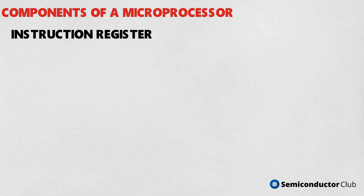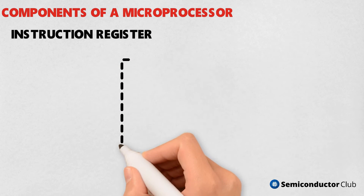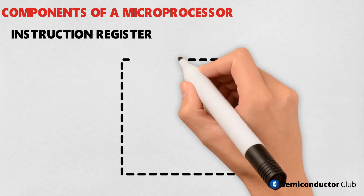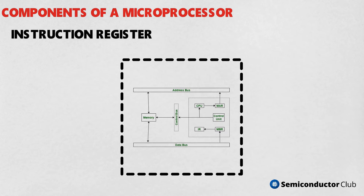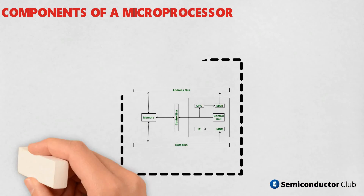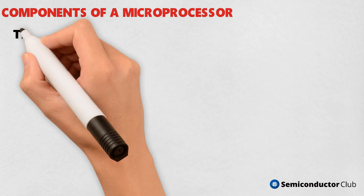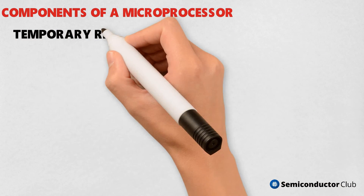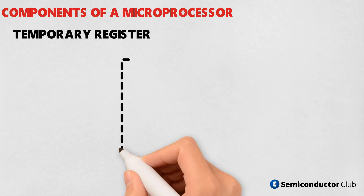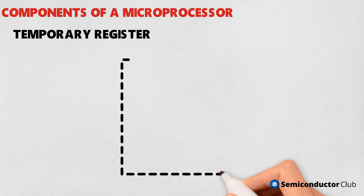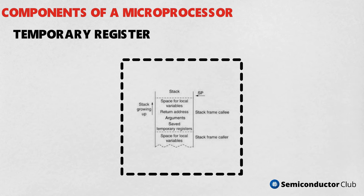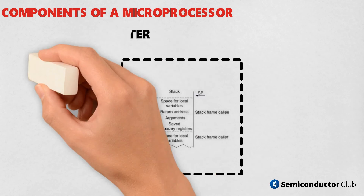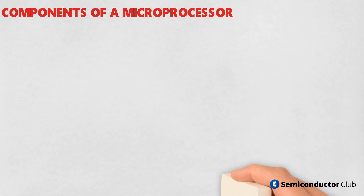Instruction Register. The instruction register holds the opcode, operation code or instruction code, of the instruction which is being decoded and executed. Temporary Register. It is an 8-bit register associated with the ALU. It holds data during an arithmetic or logical operation. It is used by the microprocessor internally and is not accessible to the programmer.